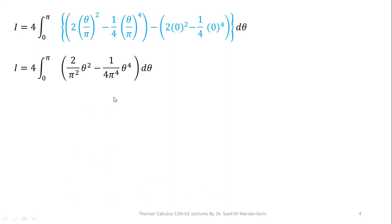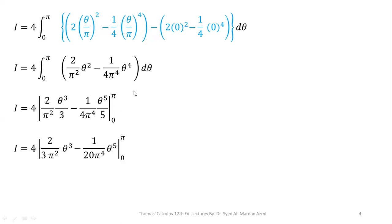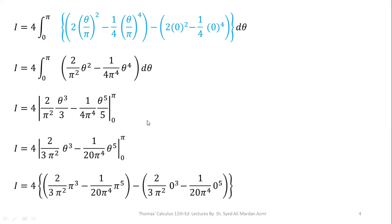Next, we perform integration with respect to theta. The integration of theta squared with respect to theta is theta cubed over 3, and the integration of theta to the power 4 is theta to the power 5 over 5. After applying the integration and simplification, we have 4 times [2 over (3 pi squared)] times theta cubed minus [1 over (20 pi to the power 4)] times theta to the power 5. Applying the limits — for the lower limit theta equals 0 the bracket becomes 0, and for the upper limit theta equals pi, we have pi cubed and pi to the power 5.